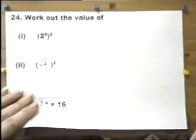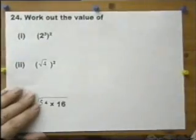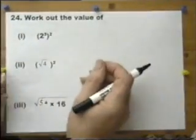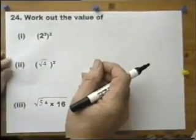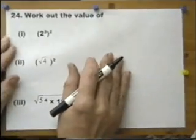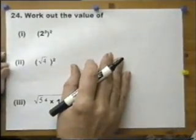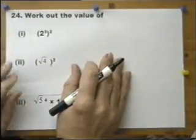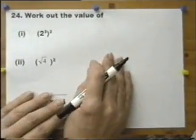Number 24. Indices. Working with indices. Now, there are three rules of indices.